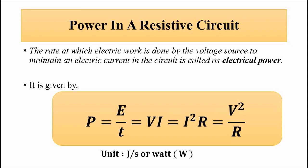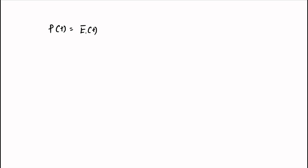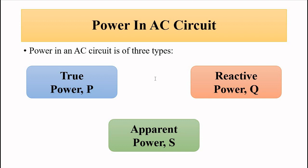In AC circuits, instantaneous power is the product of the instantaneous EMF and current — specifically, the time-varying alternating EMF and the resultant time-varying current. Power in AC circuits can be categorized into three types: true power, represented by P; reactive power, Q; and apparent power, S.